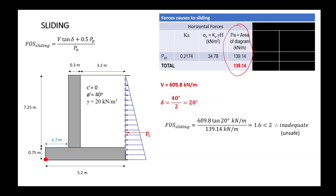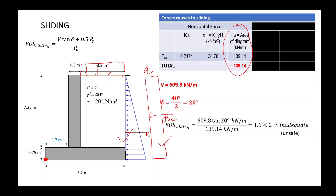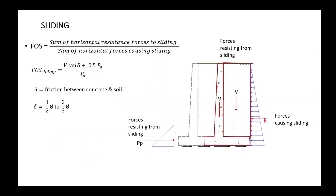If there is a surcharge at the back, you need to consider it in the calculation. In this case, since there is no surcharge, only the triangular shape applies. For delta, the range is from phi/2 to (2/3)phi, and normally we use phi divided by 2.